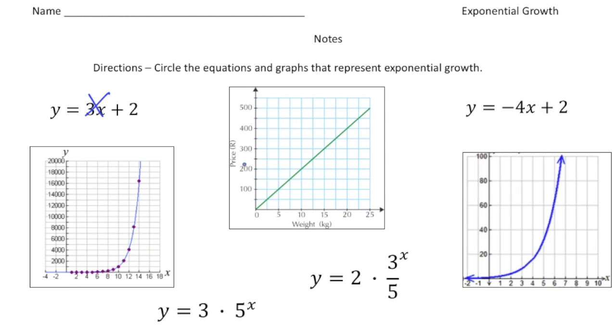This one over here, again, this is a linear graph. So that's not exponential growth. This one over here, we have y equals negative four x plus two. Again, that's another linear function. So that's not it. Now here we have y equals three times five to the x power. And this b value is more than one, so yes, this one would show exponential growth.